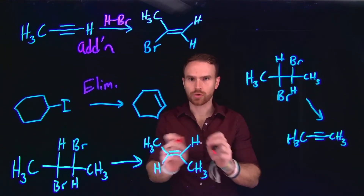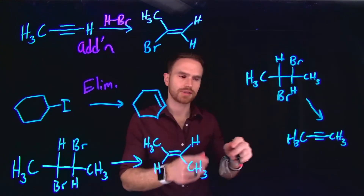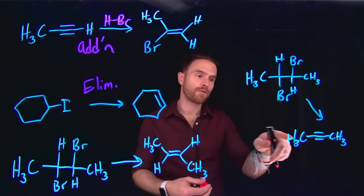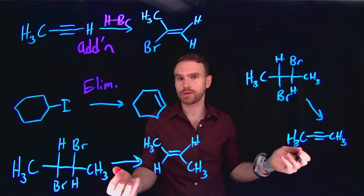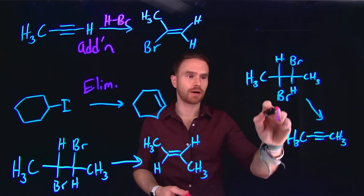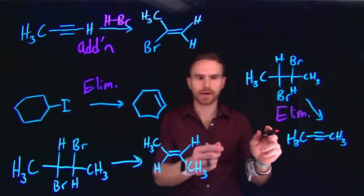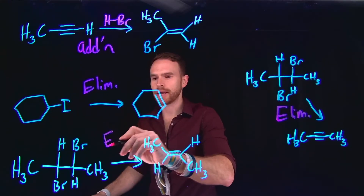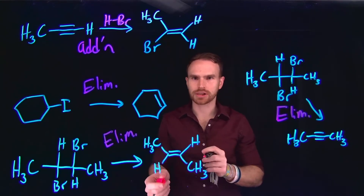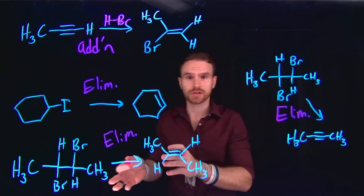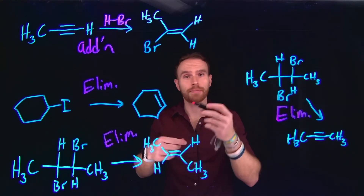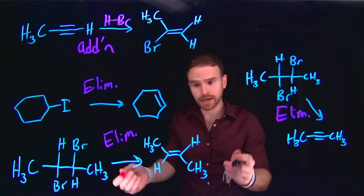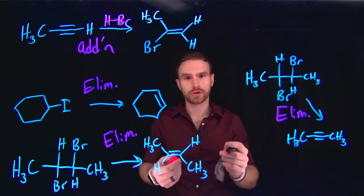The next two are important to be able to discern the differences between. The first one is pretty intuitive — this is a double elimination, where you are removing two of the dihalo halogens to form, going from an alkane with no double or triple bonds, all the way to an alkyne. This would be a double elimination. The next one, where you have the same substrate but end up with an alkene, is also still an elimination reaction. It's important to remember the reaction conditions that allow you to form one product versus the other.